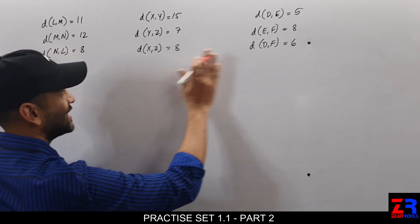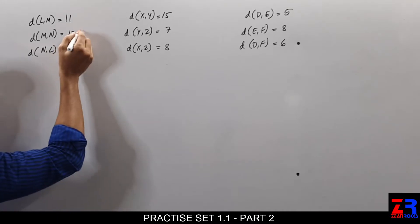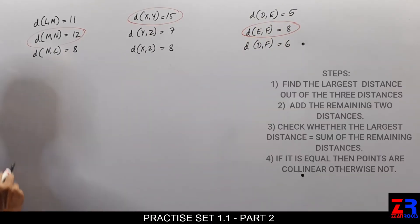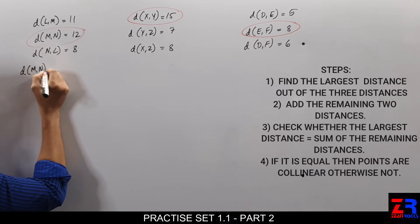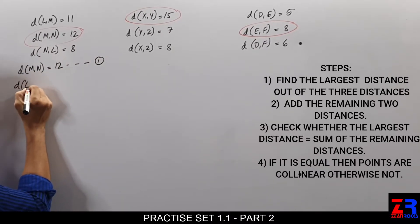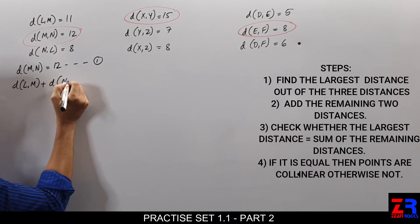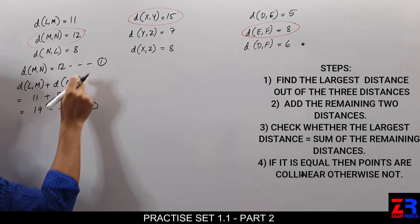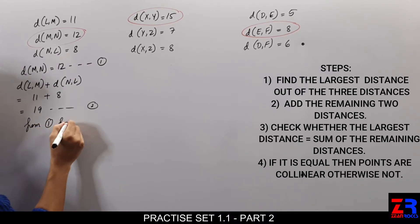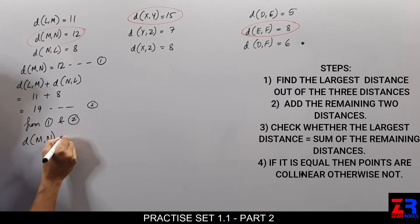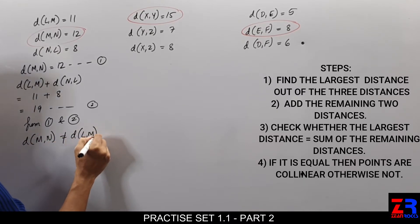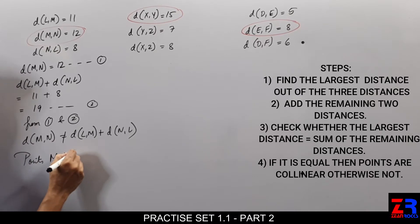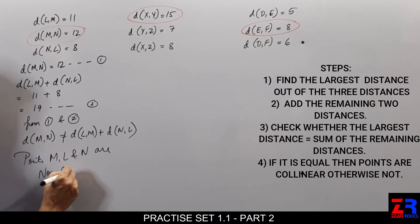This is sub-question 4, 5, 6. The biggest side among 12, 15, 8 is — let's check. Distance ML is equal to 12 (equation 1). Distance LN plus distance MN equals 11 plus 8, which is 19 (equation 2). From 1 and 2, distance ML is not equal to distance LN plus distance MN. That means points M, L and N are non-collinear.